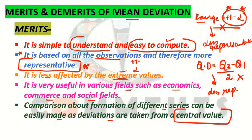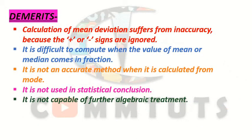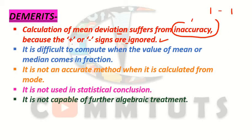I hope you have understood those. Now let us understand its demerits — what are the disadvantages of this method. The first disadvantage is that the calculation of mean deviation suffers from inaccuracy because the plus or minus signs are ignored. When we calculate deviations, we draw two straight lines — the modulus symbol — so whatever negative values there are, we consider only positive. Because of this, its calculation sometimes suffers from inaccuracy.